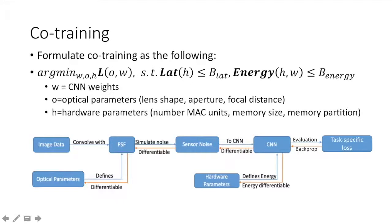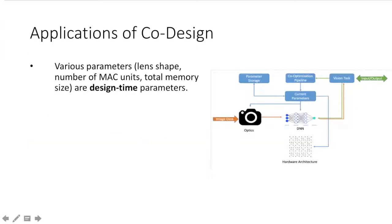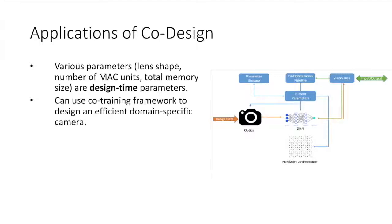Formally, this co-training can be expressed as an argument over those three sets of parameters on the loss of the task, such that our latency of the hardware is lower than some latency budget, and that our energy with respect to the hardware and CNN weights is lower than our energy budget. This co-design process has multiple applications. Various parameters such as lens shape, number of MAC units, and total memory size are design time parameters. In this case, we can use our co-training framework to design an efficient domain-specific camera, where these parameters are allowed to vary.